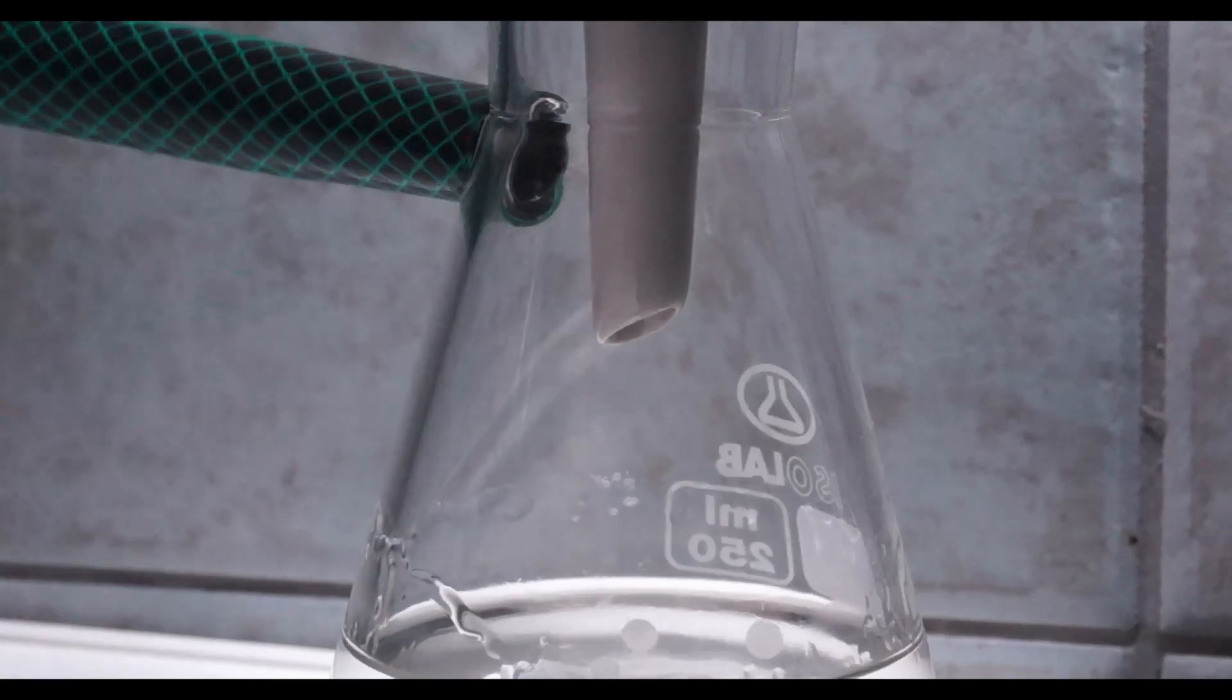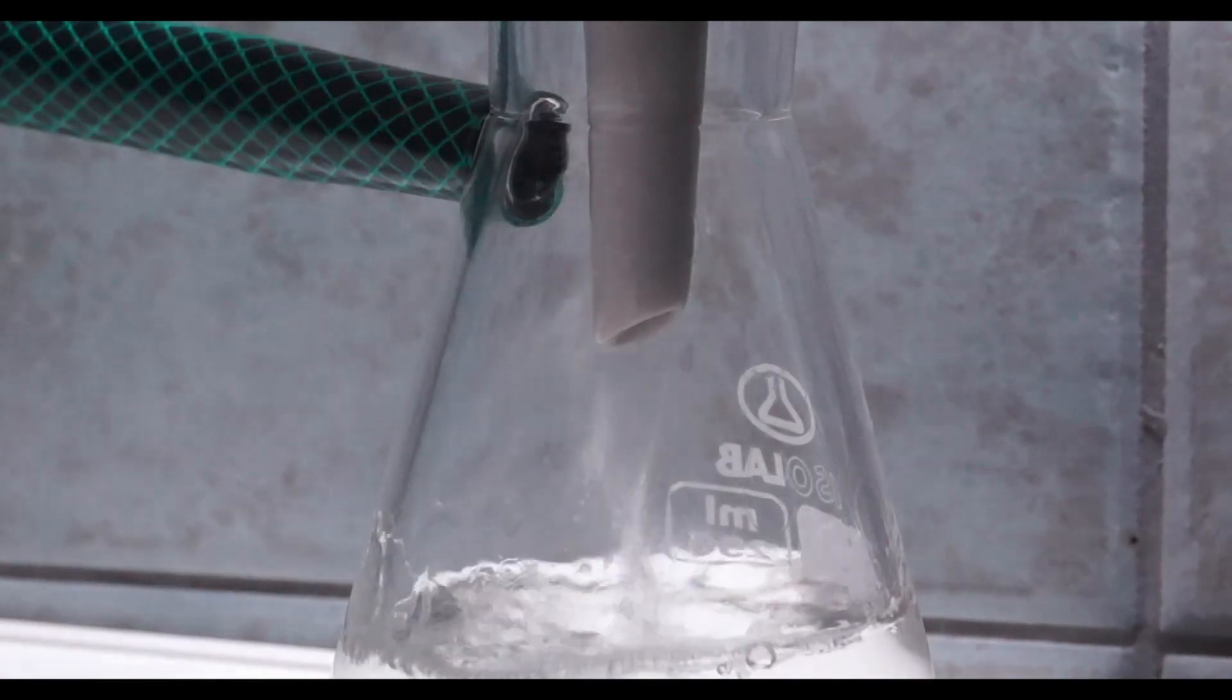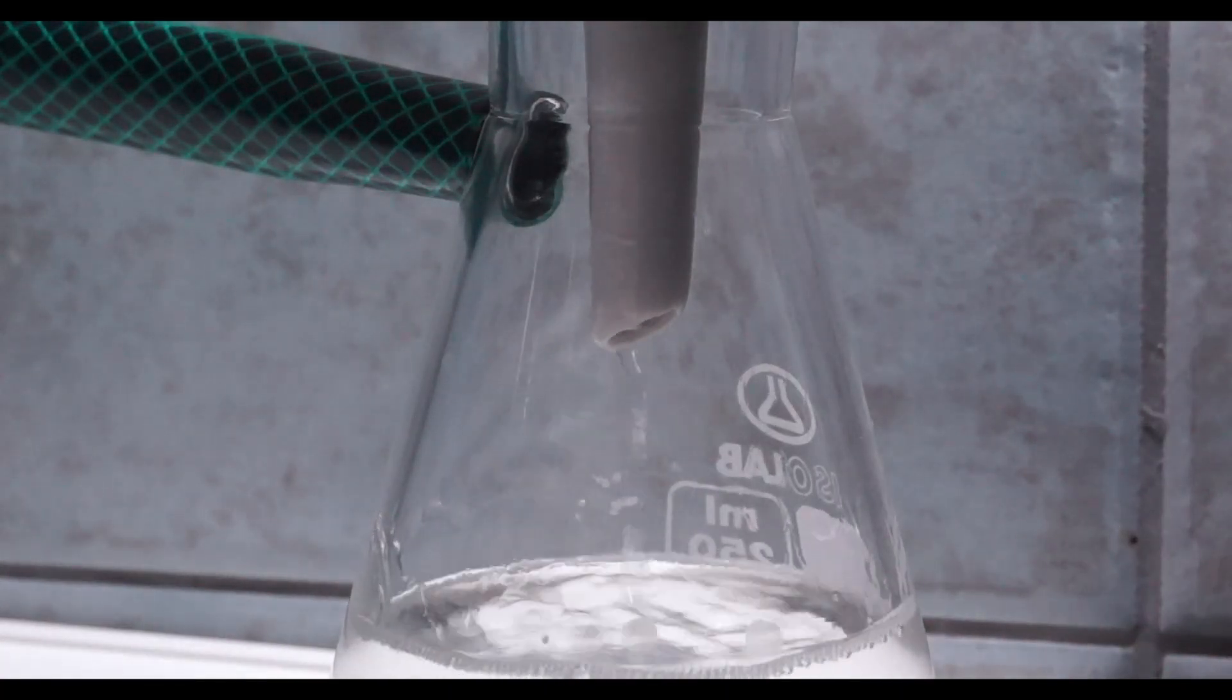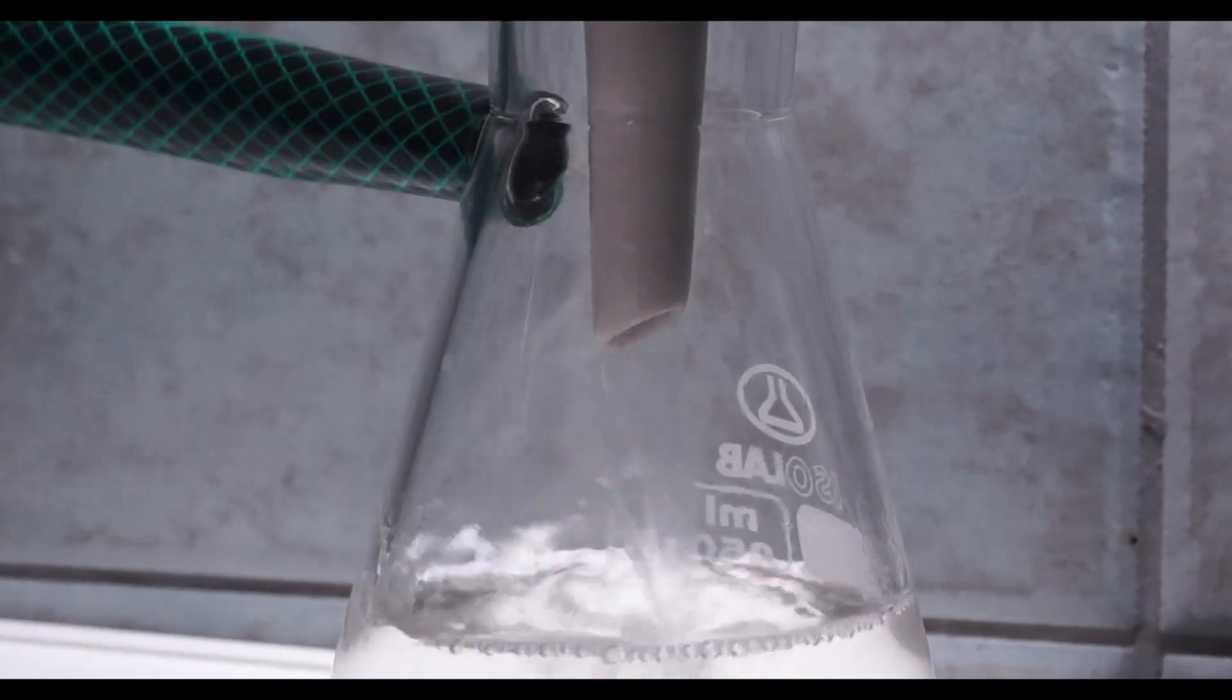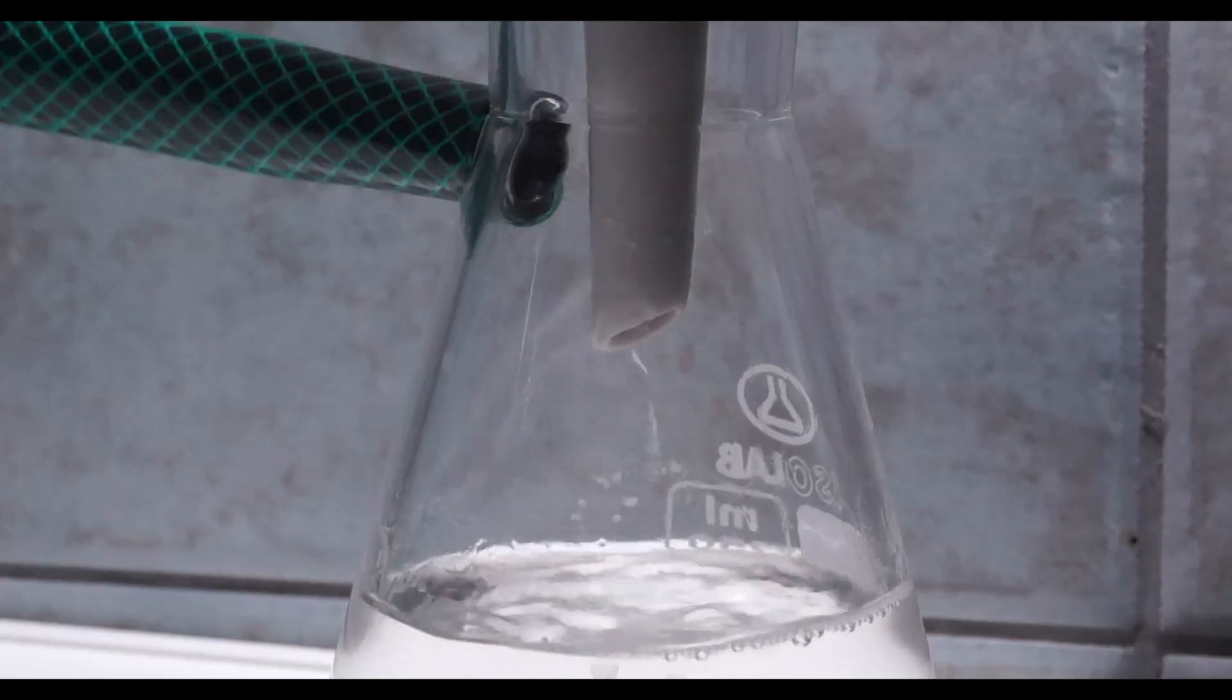I washed the beaker and the solids in the Buckner funnel with another 50ml of fresh hot acetone. The paracetamol that I want is dissolved in the filtrate and as you can see the product began to crystallize in the vacuum flask.